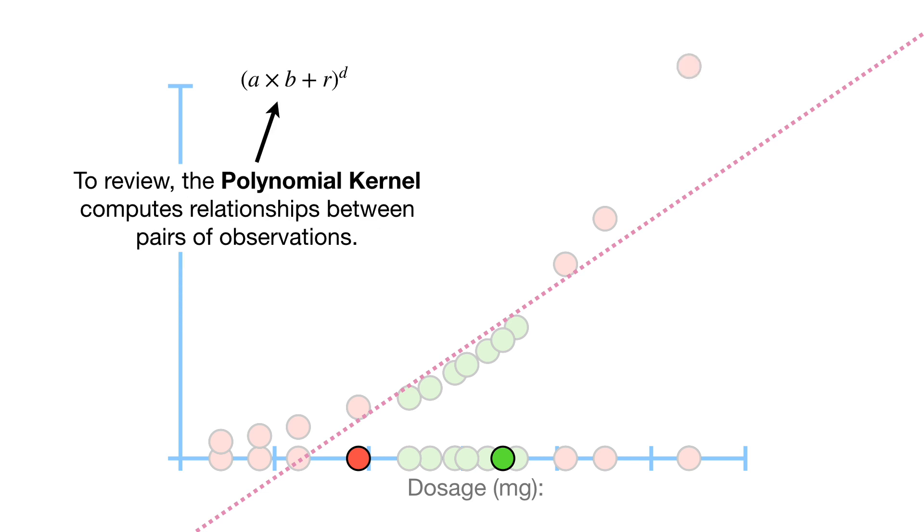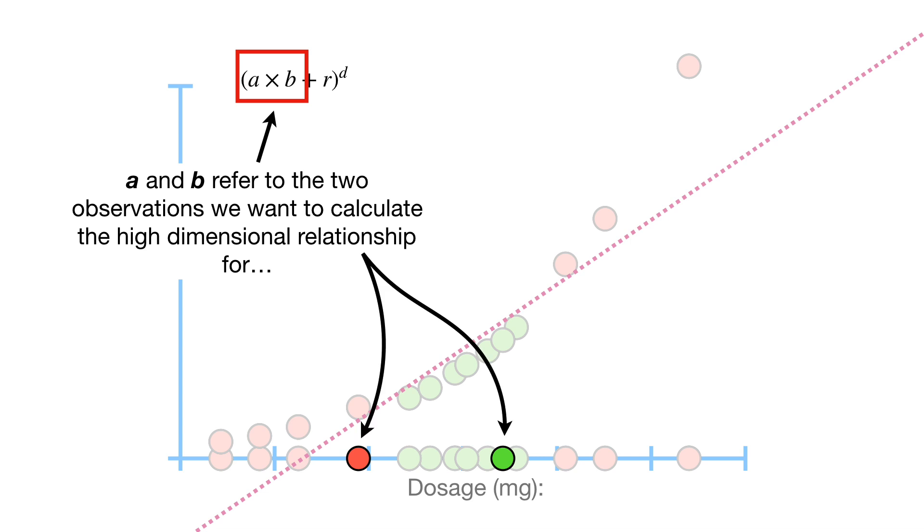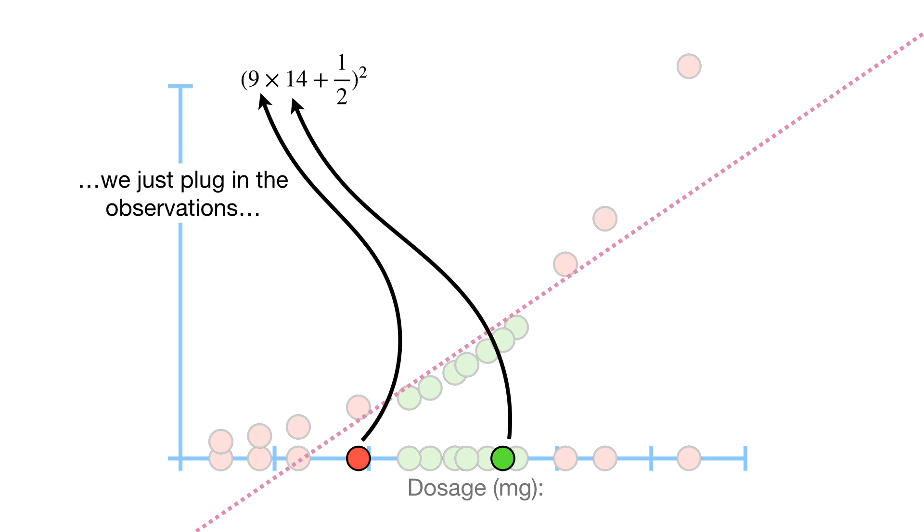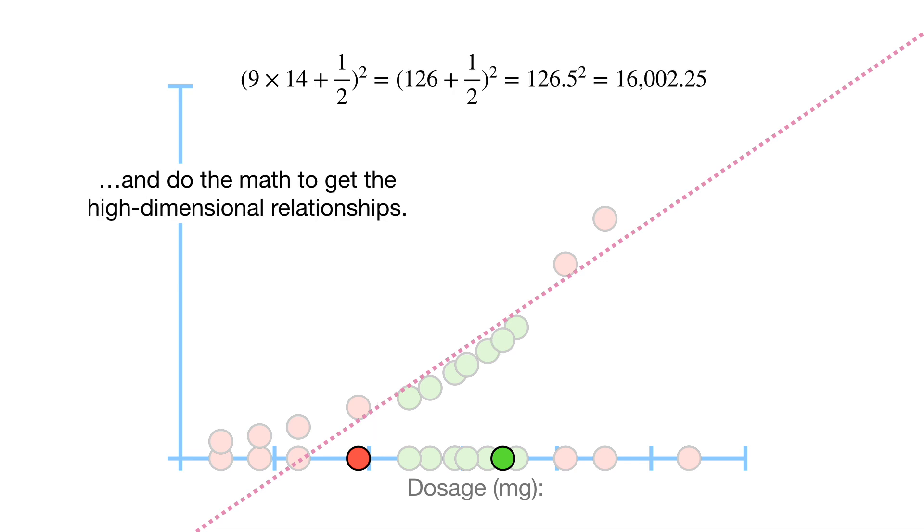To review, the polynomial kernel computes relationships between pairs of observations. A and B refer to the two observations that we want to calculate the high-dimensional relationships for. R determines the polynomial's coefficient, and D determines the degree of the polynomial. R and D are determined using cross-validation. Once we decide on values for R and D, we just plug in the observations and do the math to get the high-dimensional relationships.